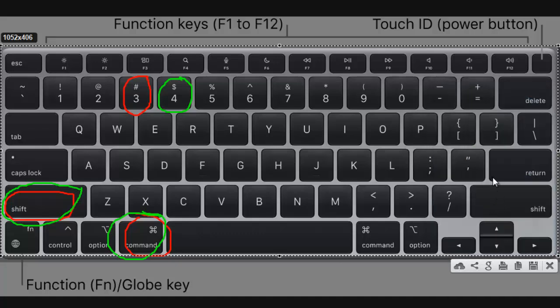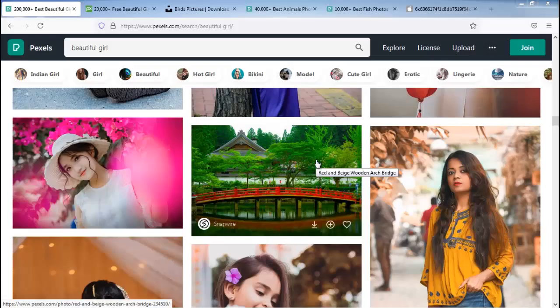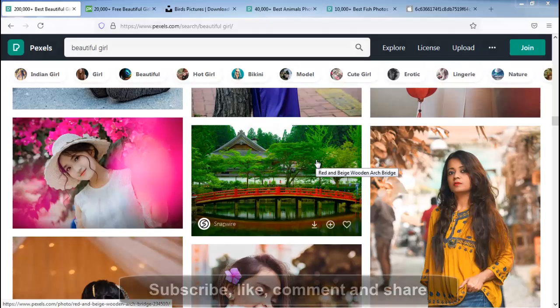If you want to take a screenshot of a specific window on Mac, press Shift+Command+5. The pointer will become a camera icon — just click on the window to capture it, and the screenshot will be saved on your desktop. You can also take screenshots using software built into the operating system.